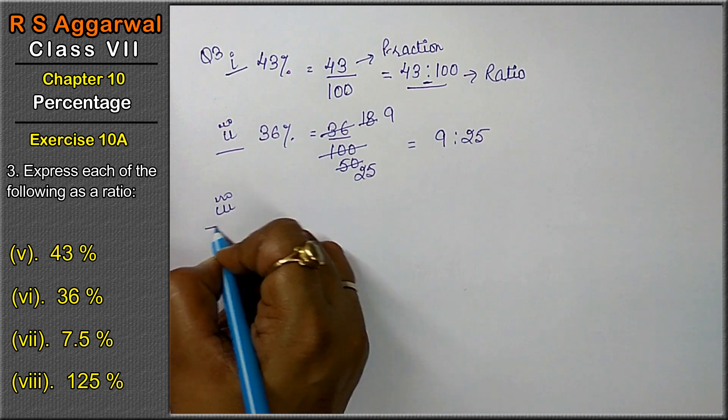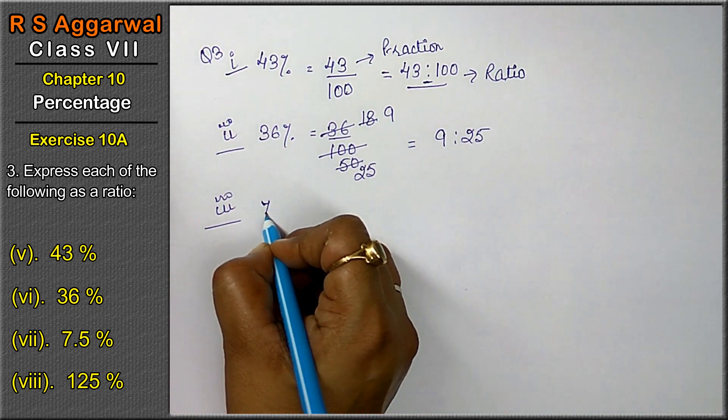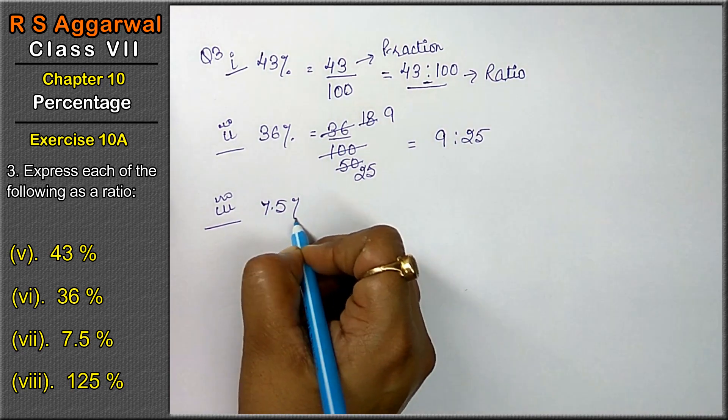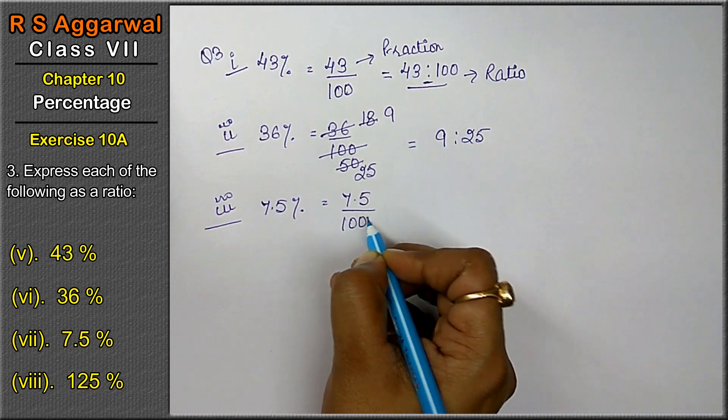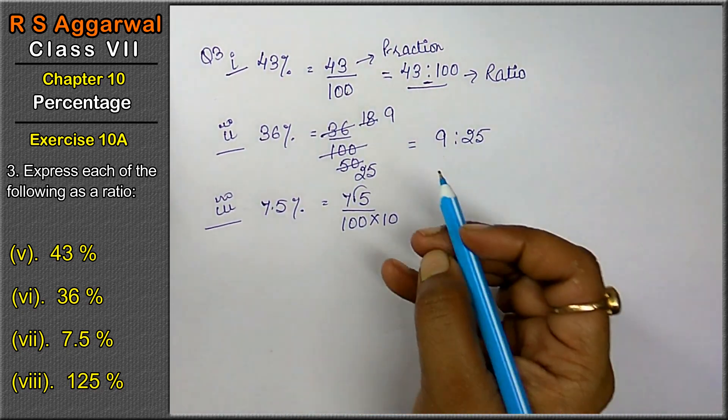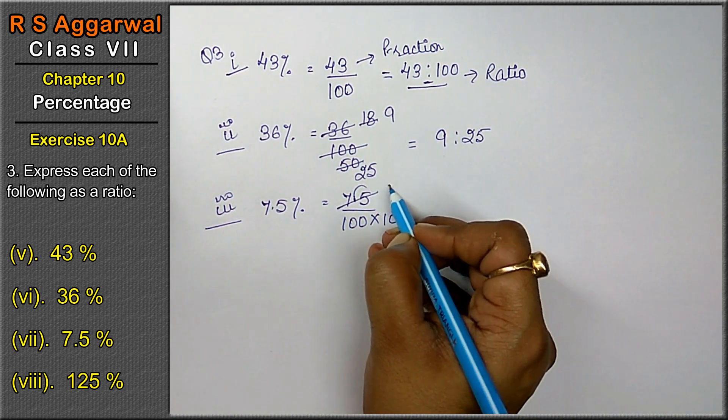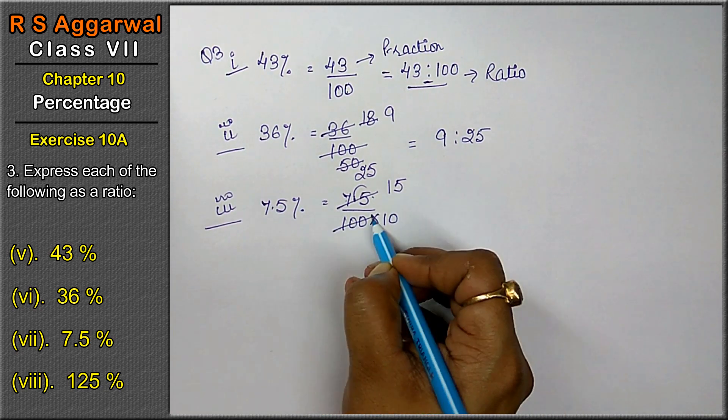Third part. Let's do third part. Third part is 7.5%. 7.5% is 7.5 upon 100. Now we have to take away the point. We have to put 1 0. Now 5 is a 5. 25 5. 5 is a 25.